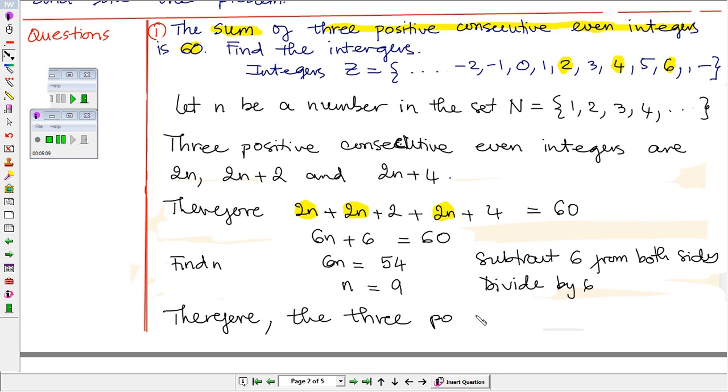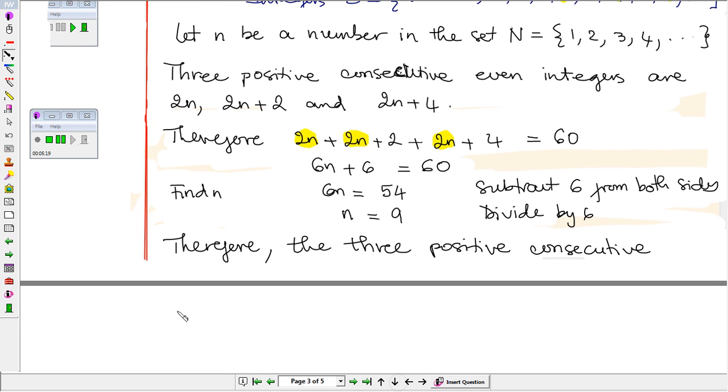The three positive consecutive integers are 2n, 2n plus 2, and 2n plus 4.